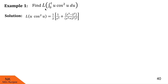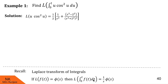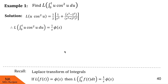After this, we find L{∫₀ᵗ u·cos²u du}. I recall the formula: L{∫₀ᵗ f(t) dt} = (1/s)·φ(s), where φ(s) = L{f(t)}. In this particular case, the integrand is u·cos²u and its Laplace transform is the term we just computed. So we multiply that term by 1/s to get the Laplace transform of this integral. I hope you understood this example.